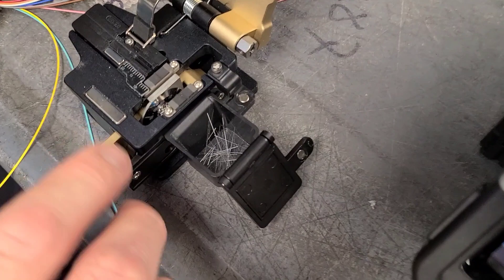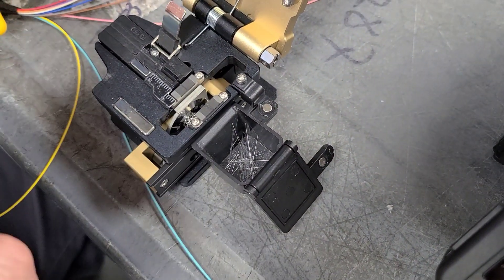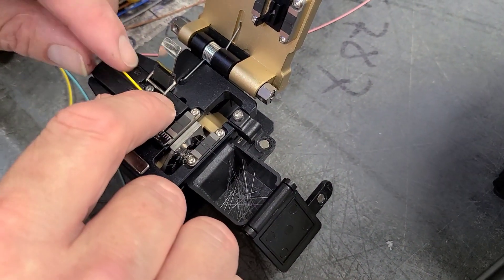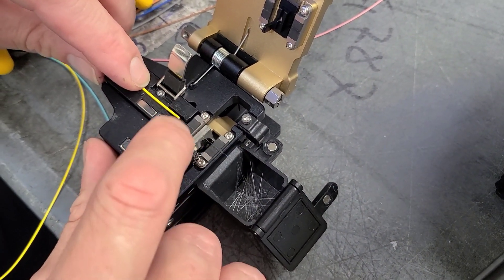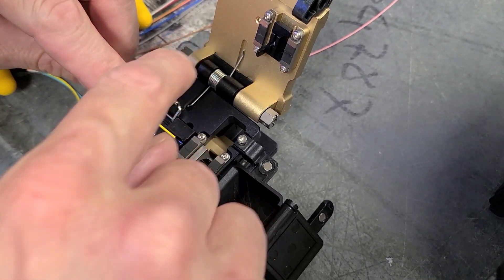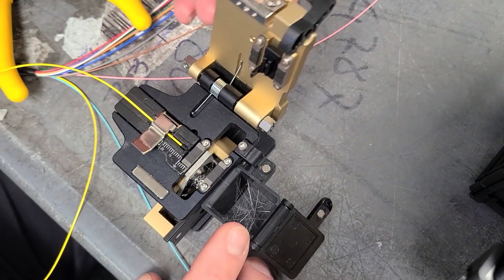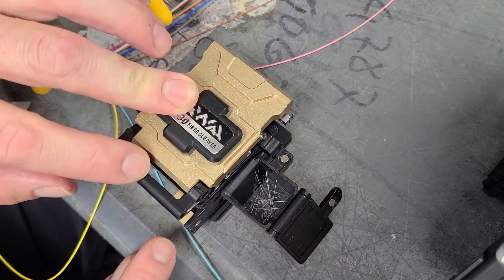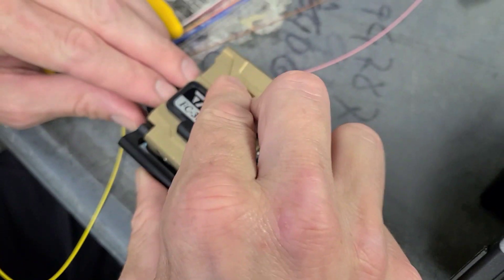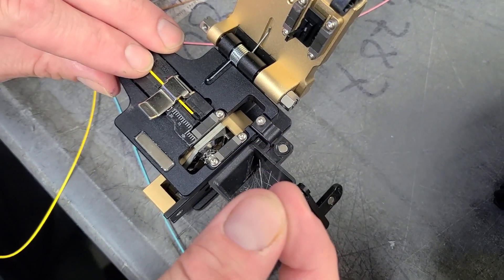Then we want to put it into our cleaver with this diamond bit right here. This slides back and forth and scores the fiber, so essentially it cuts it. We put it at 15 millimeters, which is right here. Make sure the fiber straight, click that down, then we pull the top down over it and click into place. And you push that button which will send the cleaver across of it, then leaves you with this little guy right there.